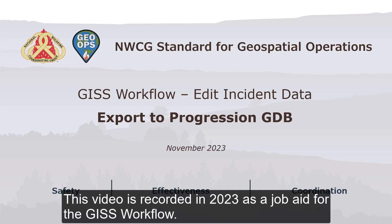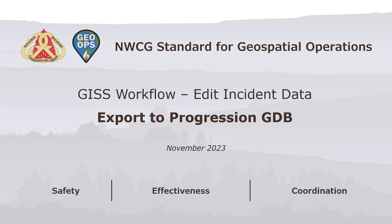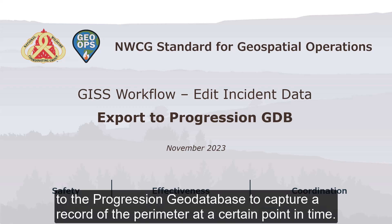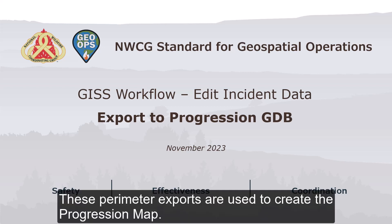This video is recorded in 2023 as a job aid for the GISS workflow. It will cover how to export the wildfire daily fire perimeter to the progression geodatabase to capture a record of the perimeter at a certain point in time. These perimeter exports are used to create the progression map.